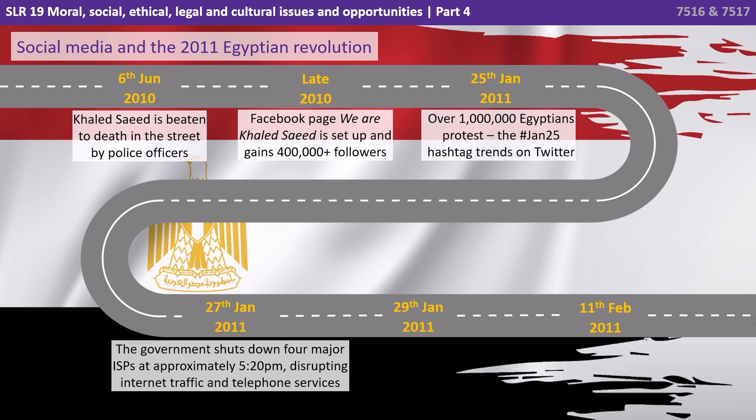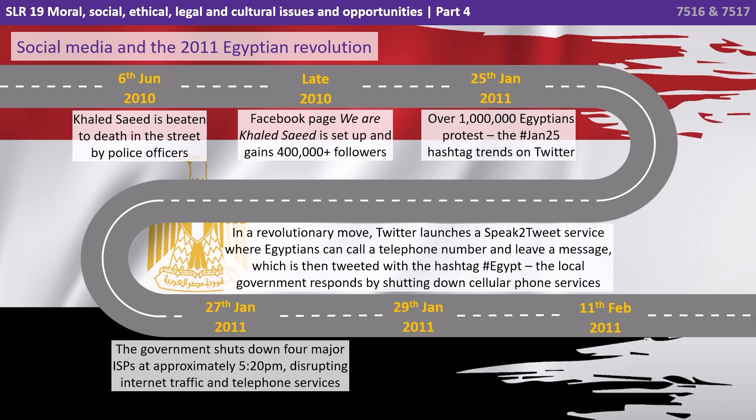On the 27th of January, the government shut down four major internet service providers at approximately 5:20pm, disrupting internet traffic and telephone services in an attempt to dampen the voices being heard online. By the 29th of January, in a revolutionary move, Twitter launched a speak-to-tweet service where Egyptians could call a telephone number and leave a message, which was then tweeted with the hashtag Egypt. The local government responded by shutting down cellular phone services. But it was all to no avail, and on the 11th of February, the Egyptian president at the time was driven from office after 30 years in power.